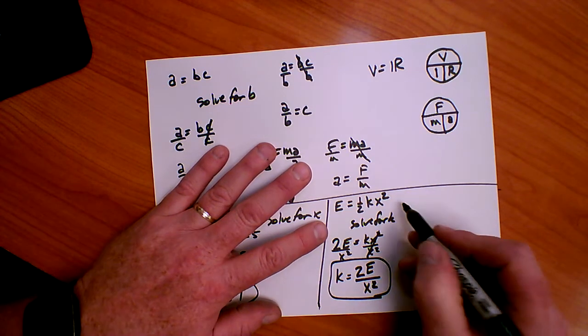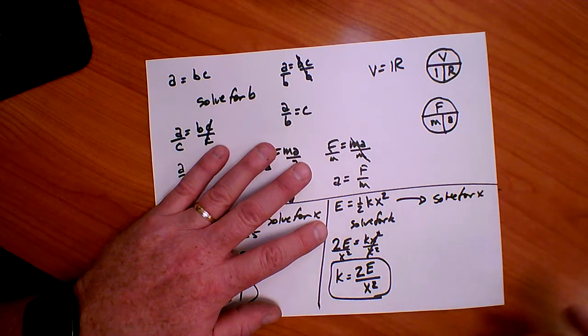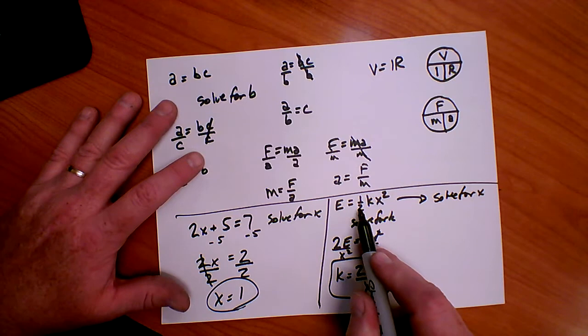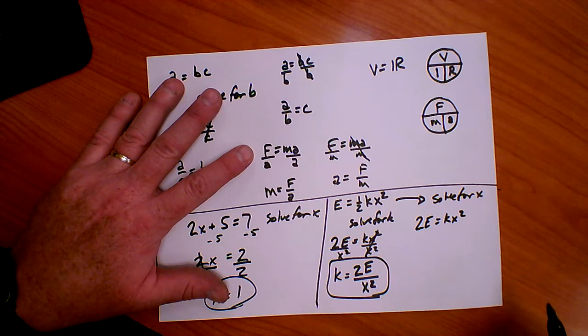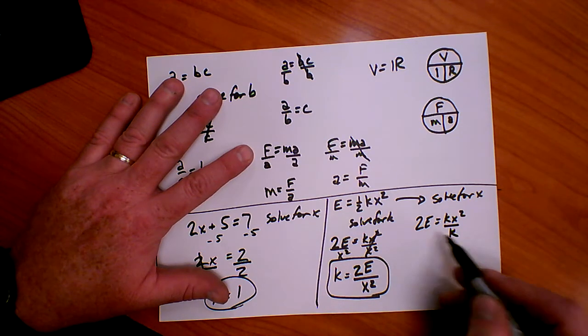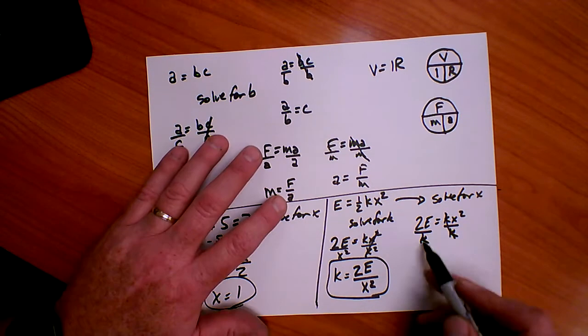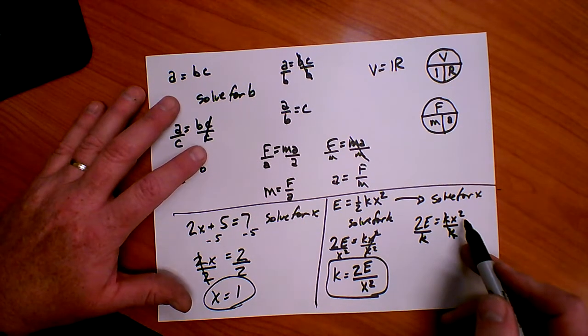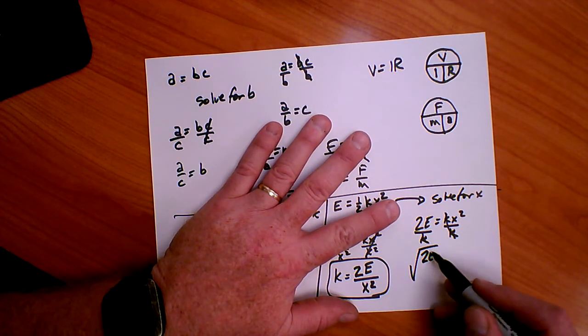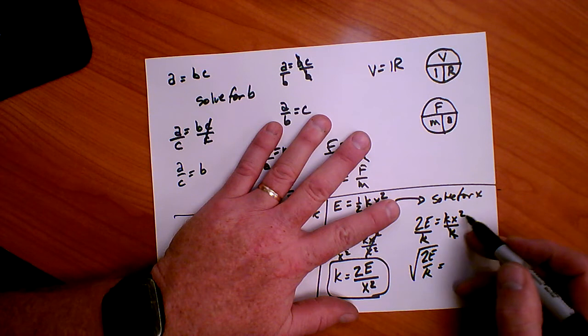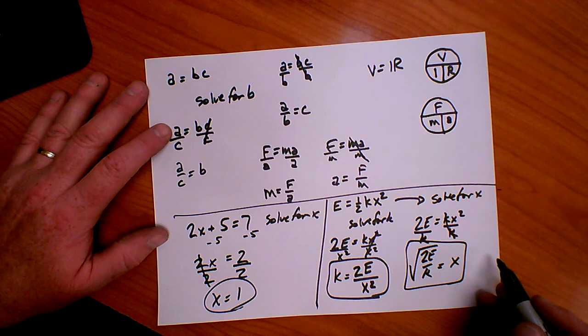But what if I wanted to solve for X? To solve for X, again, I'm going to multiply by 2. So I end up with 2E equals KX squared, right? But now to get X by itself, I need to divide by K. Let's get the K over on the other side. K's disappear. So now I've got 2E over K equals X squared. To get rid of square, I'm going to do a square root. So the square root of 2E over K equals the square root of X squared, which is X. And that is how we do that rearrangement.